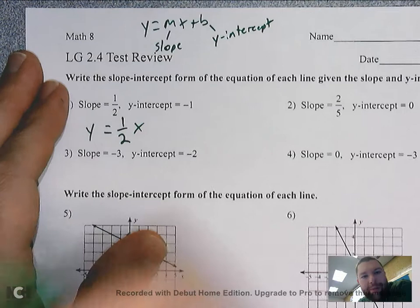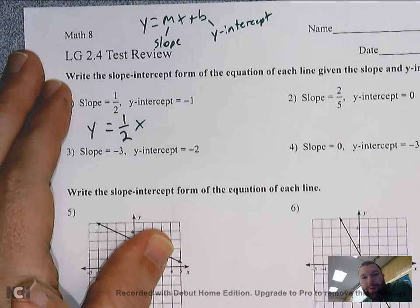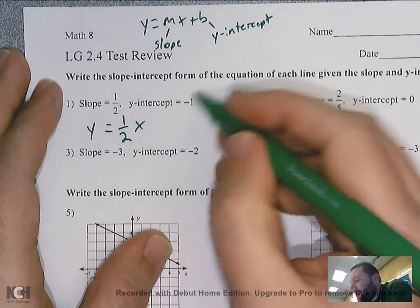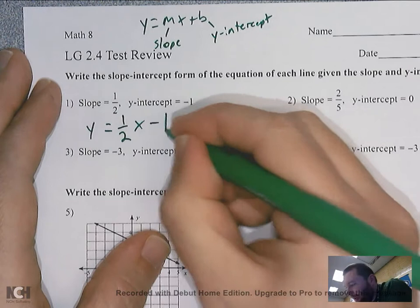It's not weird for your slope to be a fraction — you actually want it to be a fraction when you're plotting and graphing it. The y-intercept is negative one, so since it's negative, I would minus one.